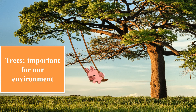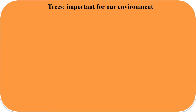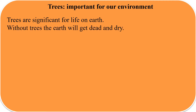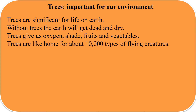Our first topic is important for our environment. We will write sentences here. These are really important and significant for life on Earth. These provide oxygen, food, and vegetables. They are home to about 10,000 types of living beings.